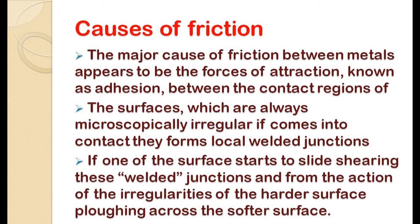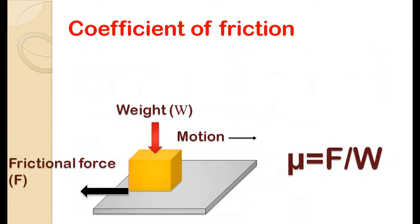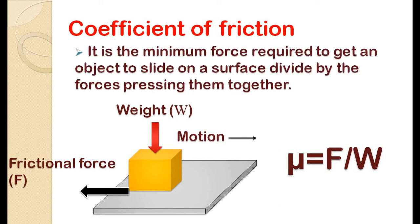Now as we have seen what is friction, we will move on to the next topic: coefficient of friction. In short, it is the minimum force required to get an object to slide on a surface, divided by the forces which are pressing them together. Mu (μ) is the symbol used to denote the coefficient of friction. It is a unitless quantity.